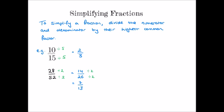You might be wondering how we know that we've finished. Well, seven and thirteen are co-prime, which means they share no other factors other than one. Once we reach a position where both the numerator and denominator are co-prime, then we're finished.